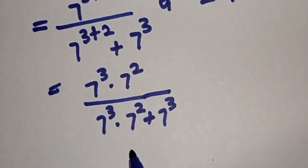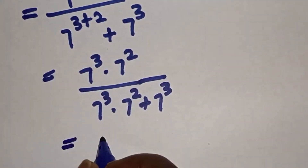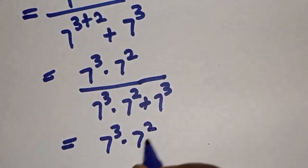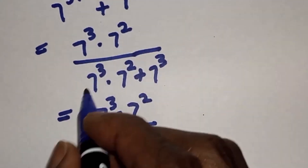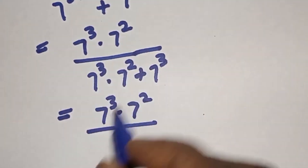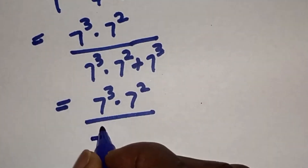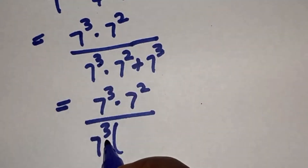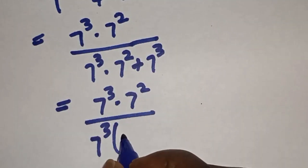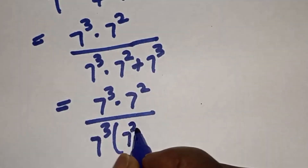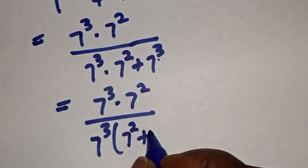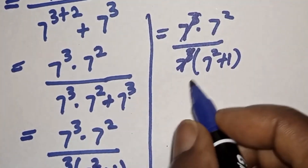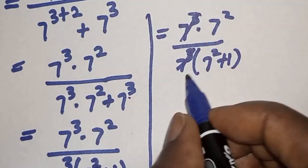Now, 7 raised to power 3 is common in the denominator. Let's bring it out: 7 raised to power 3 bracket, giving us 7 raised to power 2 plus 1. This 7 raised to power 3 will cancel with the one in the numerator.